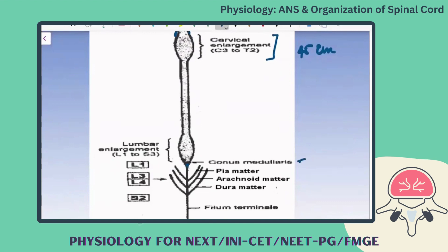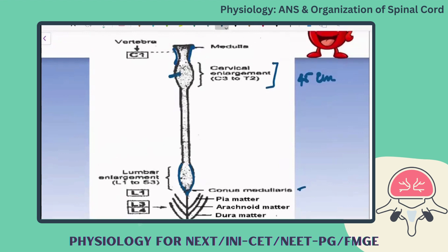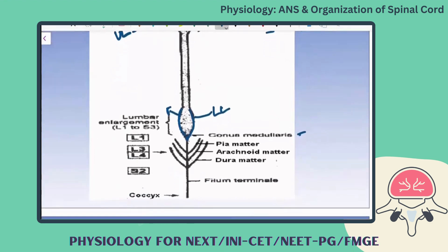The last part of the spinal cord is called the conus medullaris, and there is another enlargement called the lumbar enlargement. Through these you get the brachial plexus and lumbosacral plexus supplying the upper and lower limbs respectively. The outer protective covering of the brain is the meninges, which constitutes three layers.